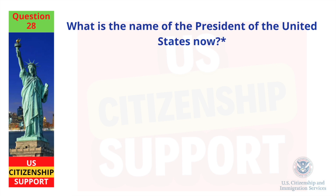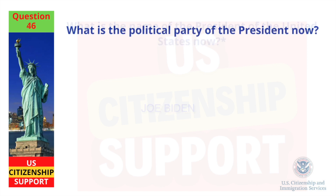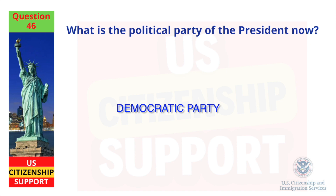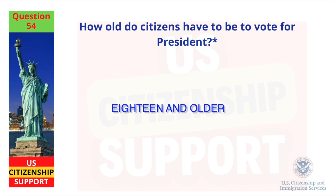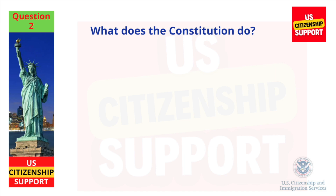What is the name of the president of the United States now? Joe Biden. What is the political party of the president now? Democratic Party. How old do citizens have to be to vote for president? 18 and older. What does the Constitution do? Sets up the government.